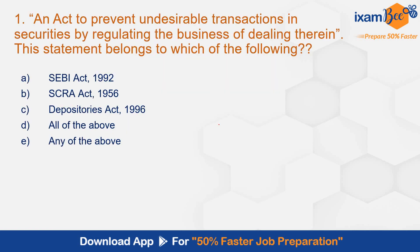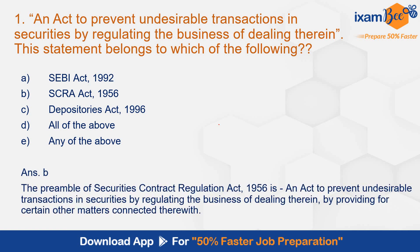Starting with the first question: 'An act to prevent undesirable transactions in securities by regulating the business of dealing therein' — this statement belongs to which of the following: SEBI Act, SCRA, depositories, all of the above, or any of the above? The correct answer is B, SCRA. This is the preamble of the SCRA Act.